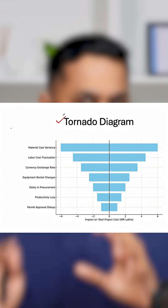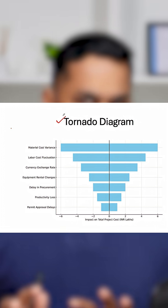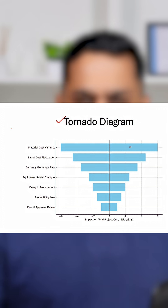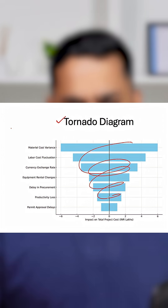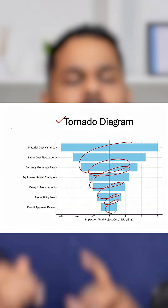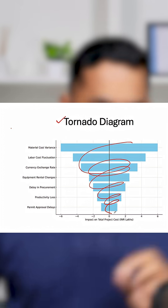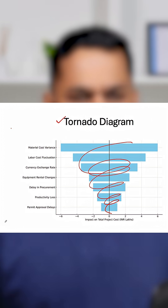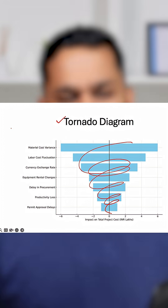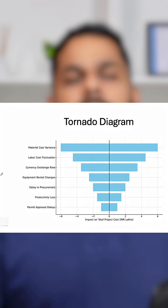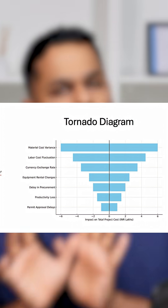As you see on the screen, the tornado diagram represents a tornado — and that's why it is called a tornado diagram. It helps you understand which are those risk factors which would impact my project the most.